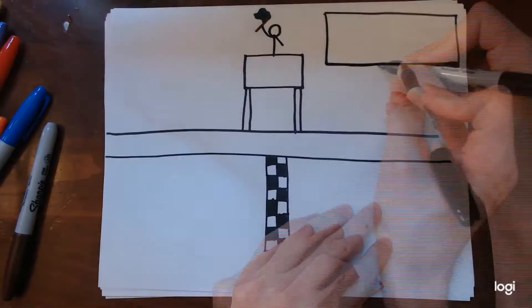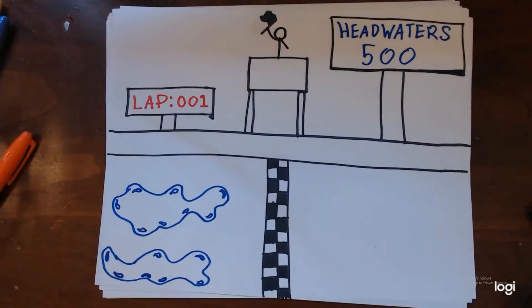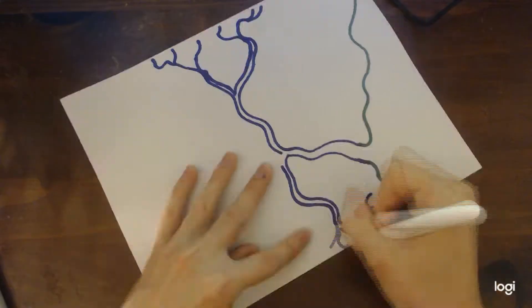Headwaters are generally defined as where the source of a river begins, or the furthest point from the end of the river.